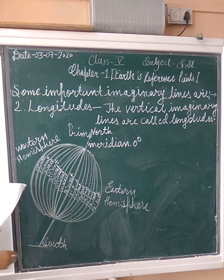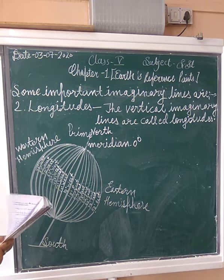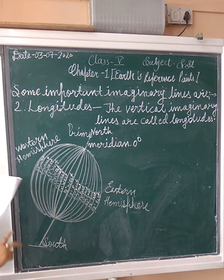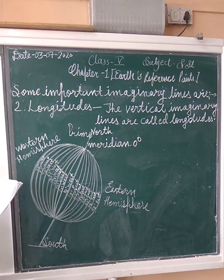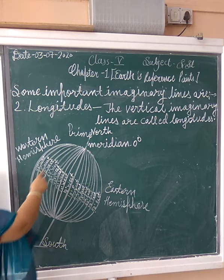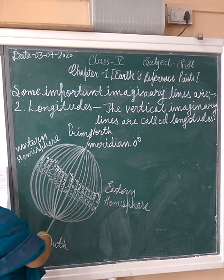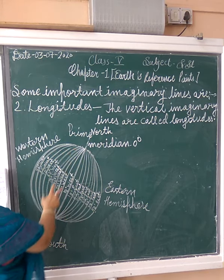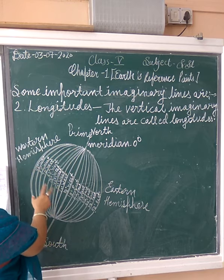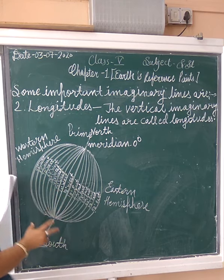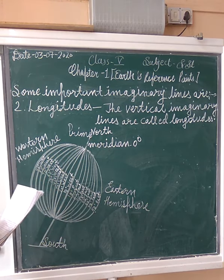Longitudes do not run parallel to each other since the Earth is spherical. Because the Earth is spherical, they are widest apart at the equator and meet at the poles.